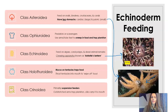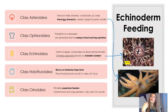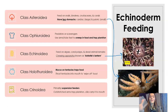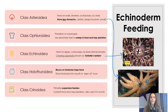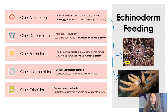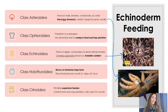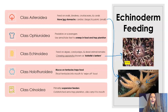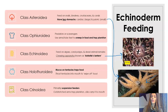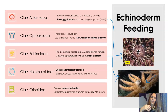Class Holothuroidea, as mentioned, have those tentacles that bring food into their mouth — kind of like wiping off your fingers. Then last up, class Crinoidea are your suspension feeders. Sea lilies are stationary and can't move, so they rely on things getting trapped in their arms, and then food is carried to their mouth with cilia.